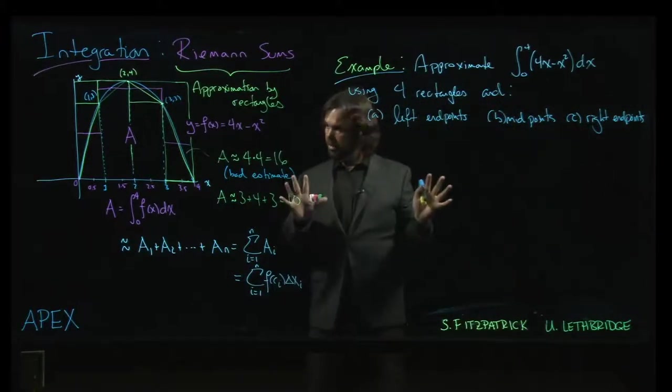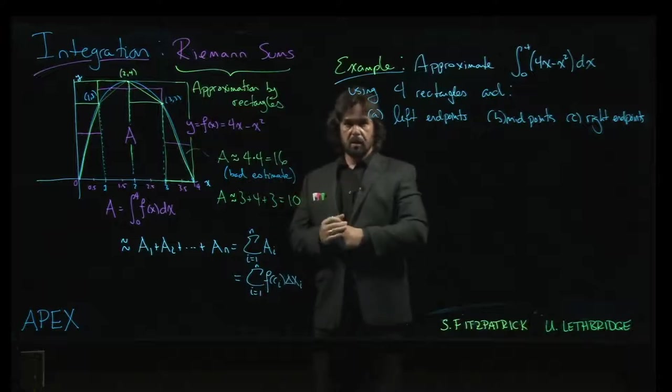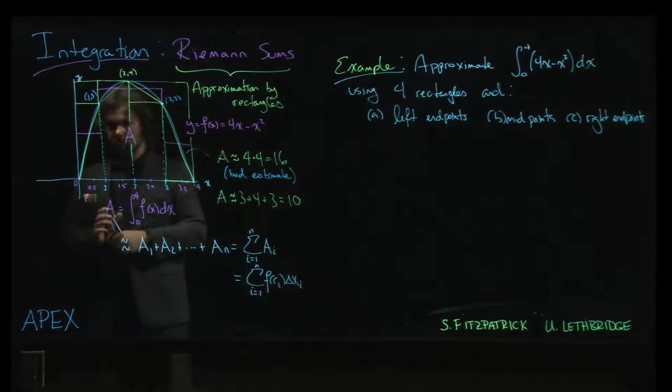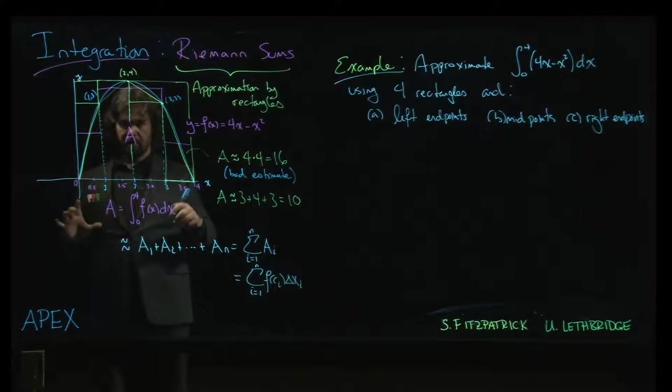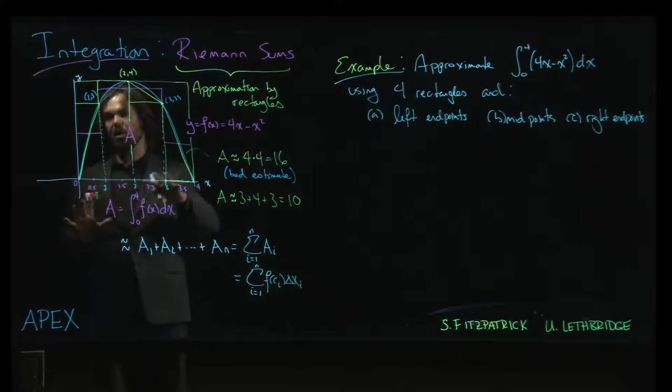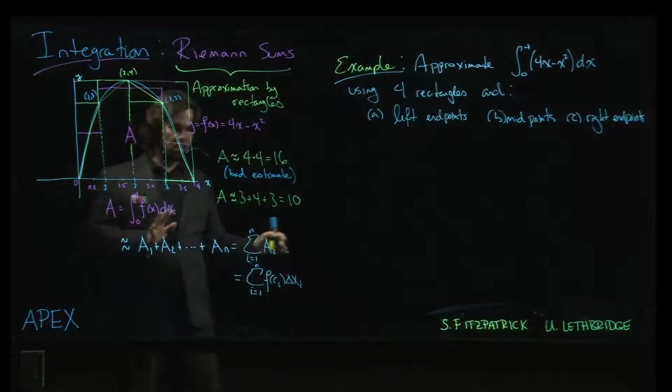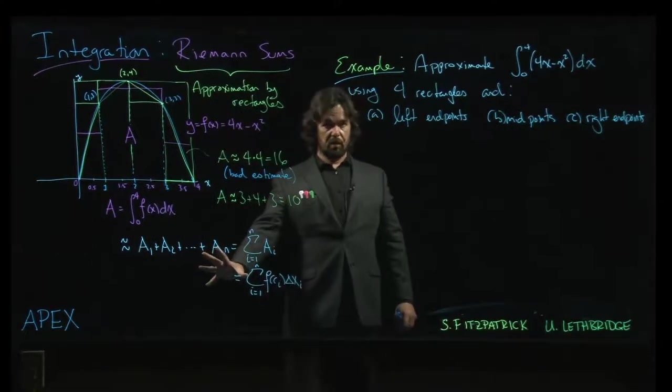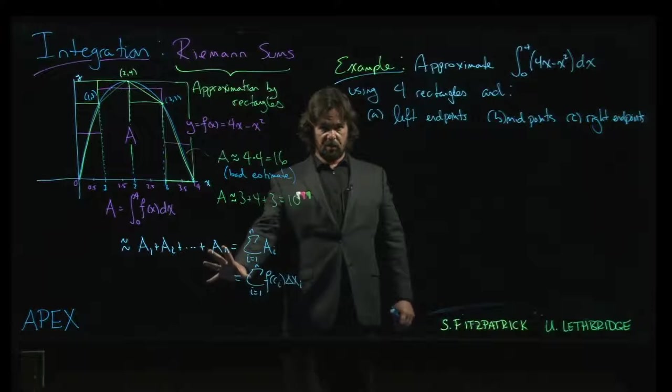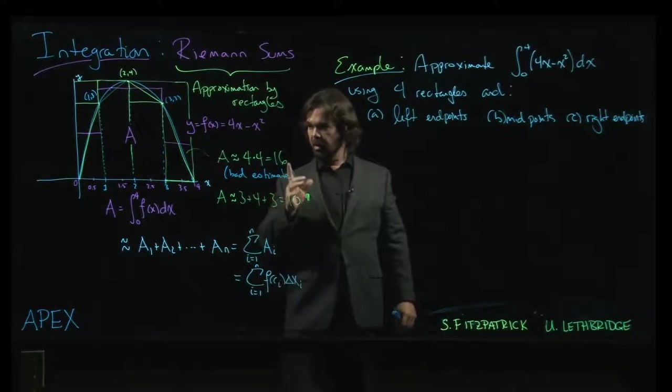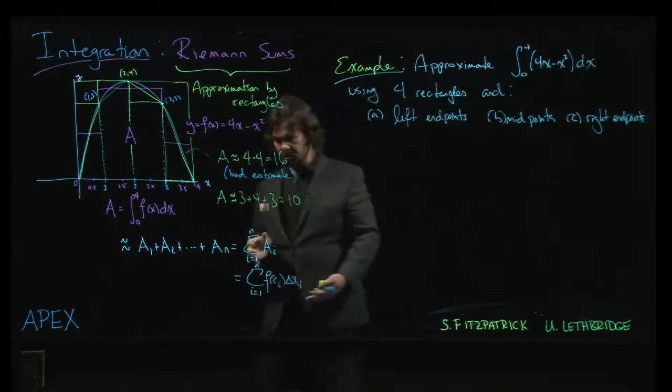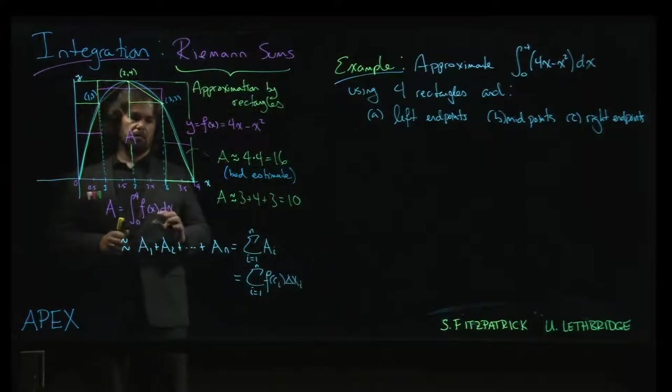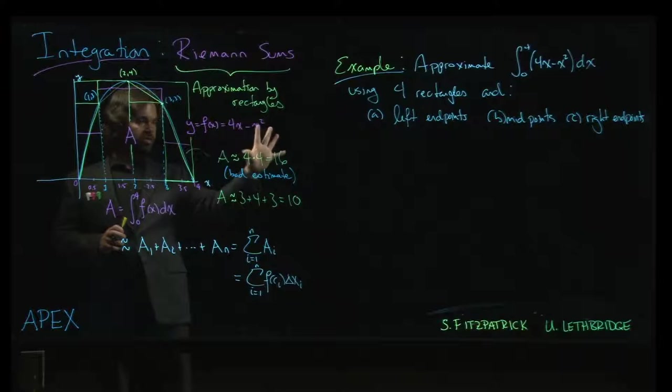In our introductory video, we discussed using rectangles to approximate the area under a graph. We talked about the various different directions you could go with that, and in particular what happens if you allow yourself to take an arbitrary number of rectangles in the approximation. Yes, we are going to head in that direction, but for now we're just going to look at a fixed number of rectangles.